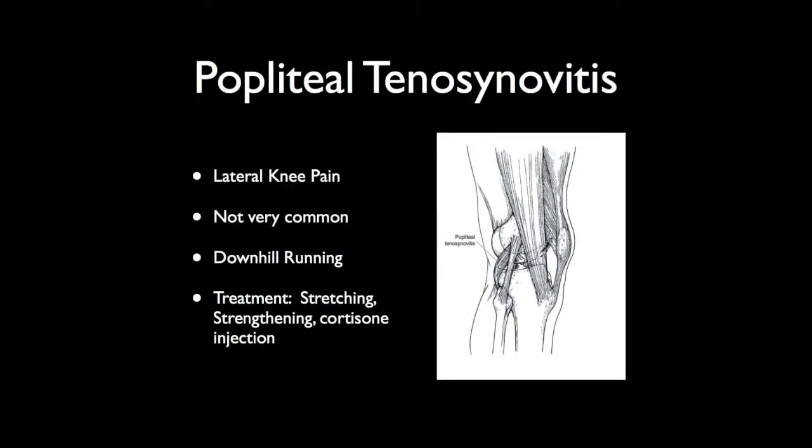In my 26 years of practice, I've had to operate on only one patient with IT band syndrome. That operation consists of taking out just a little bit of the band so it stops flipping over that bone. Finally, the last condition is popliteal tenosynovitis. The popliteous tendon comes out of the back of the knee on the lateral side, attached to a muscle that starts knee flexion. That can become inflamed. Treatment again is stretching, strengthening — just like the IT band — and a cortisone injection.